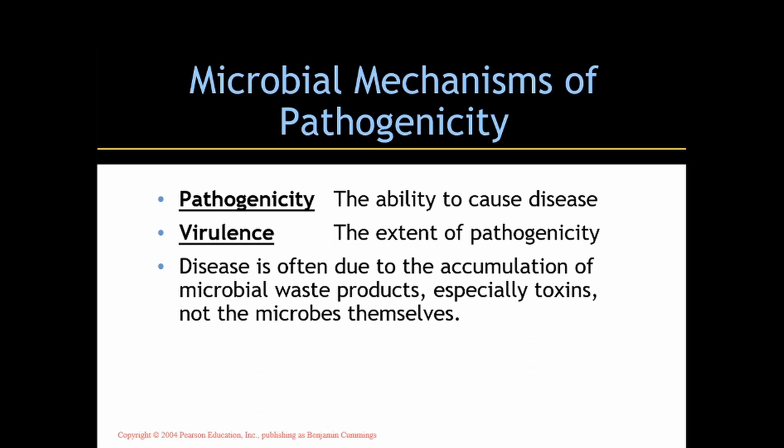Virulence is the extent of pathogenicity — how virulent is that particular strain of bacteria? For example, with E. coli, some strains are more virulent than others. Some create no pathogenicity within us, and some create pretty serious illness. So virulence is used to describe the extent.